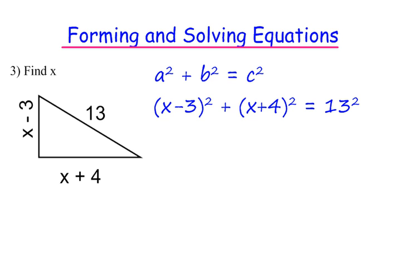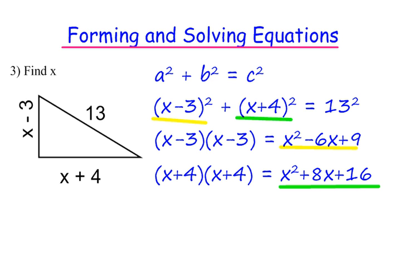So let's expand these two brackets. x minus 3 squared is the same as x minus 3 times x minus 3, which gives us x squared minus 6x plus 9. x plus 4 squared is x plus 4 times x plus 4, so it's x squared plus 8x plus 16.